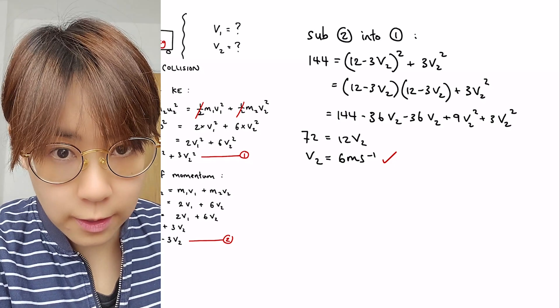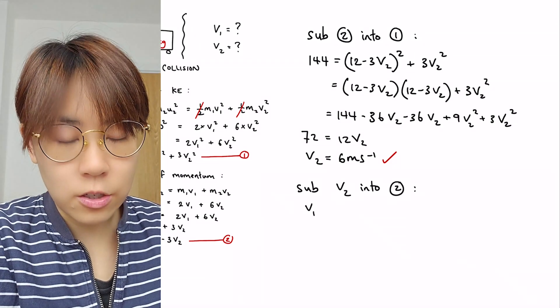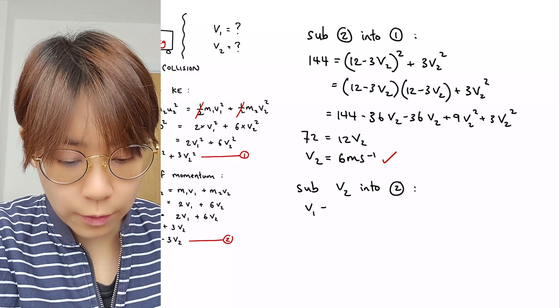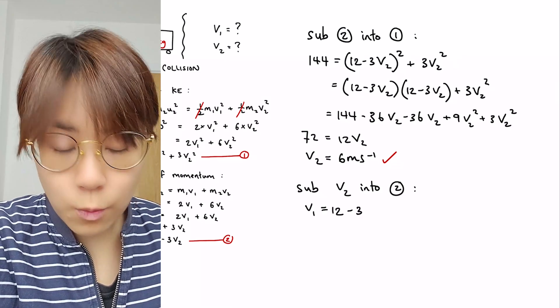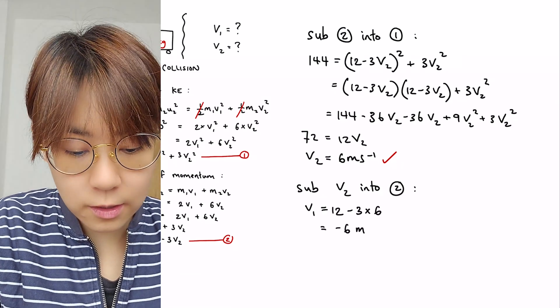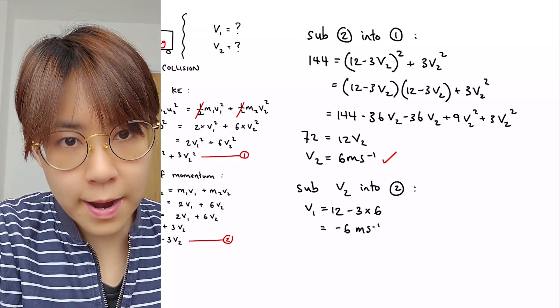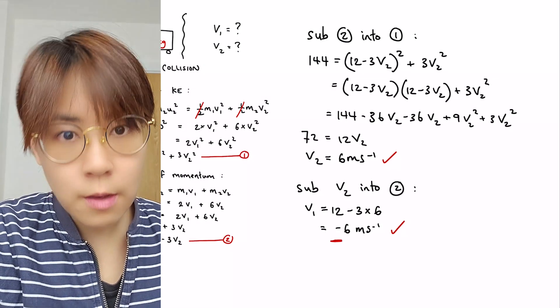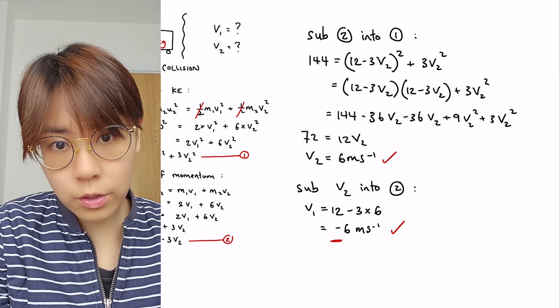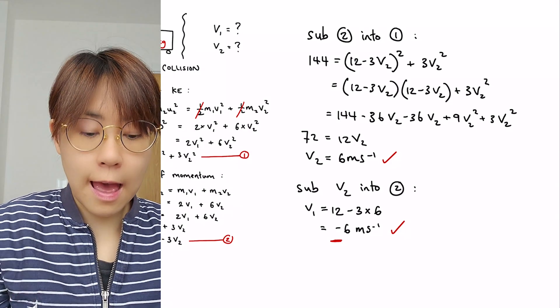And finally, we're going to put this information back into equation number two. We find that v1 is equal to minus 6 meters per second. The minus sign here is significant because it tells us that trolley number one recoils in the opposite direction after the collision takes place.